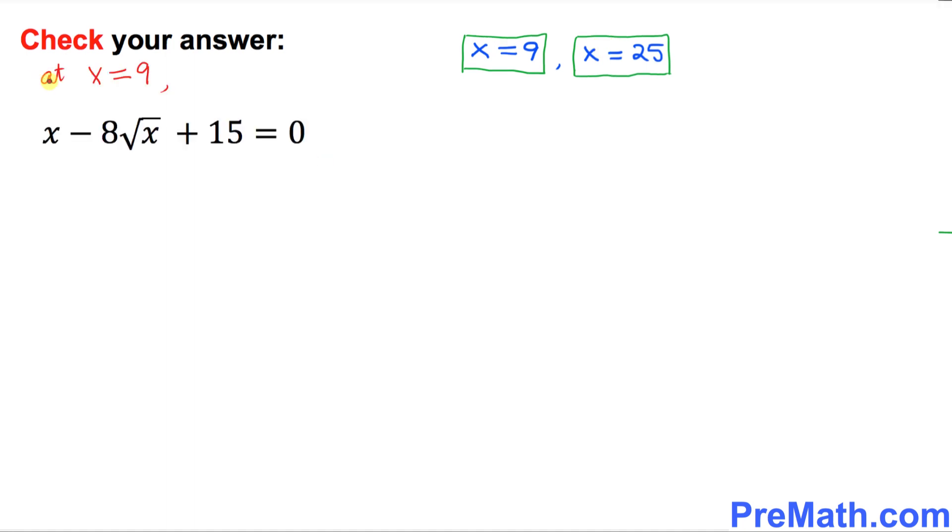So let's go ahead and check x equal to 9 if it is going to work for us. So wherever you see x, you replace that one by 9. So that is simply going to give us 9 minus 8 times square root of 9 plus 15. My question is, is it equal to the right-hand side, which is 0?